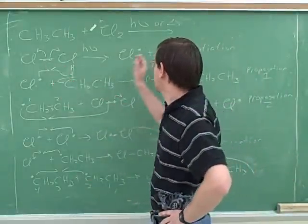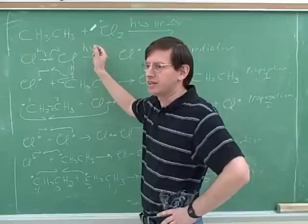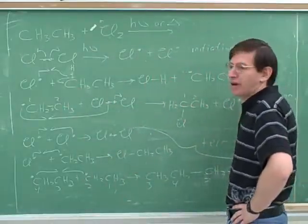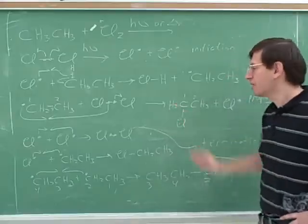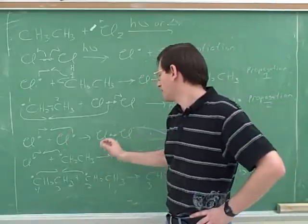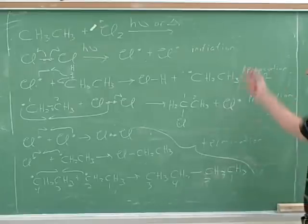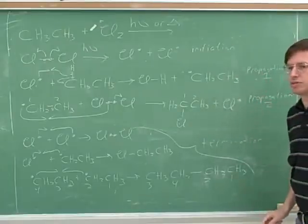If a non-radical turns into two radicals, that's the initiation, and that needs energy. If a radical and a non-radical turns into a radical and a non-radical, that propagates the chain. Same for this step. And if two radicals come together, they make a non-radical, and that terminates the step. There are some exceptions to that, but those are the basic patterns. Initiation, propagation one, propagation two, and termination.